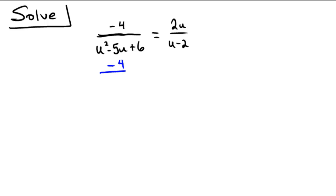So if we simplify, I always like to simplify first just in case. The denominator becomes u minus 2, u minus 3, and that's being equal to 2u over u minus 2.